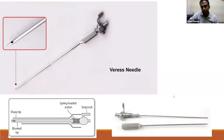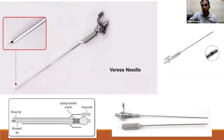When the assembly with the stylet in situ goes into a firm structure like the abdominal wall, the sharp outer cannula pierces the abdominal structures. Once it enters the peritoneal cavity, the inner blunt stylet pops out into the free space. This avoids bowel injury, which is the most important reason why we use the Veress needle.